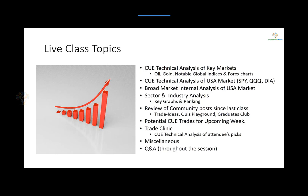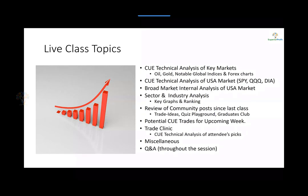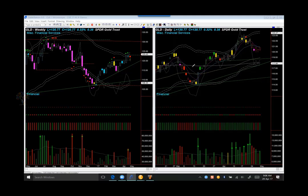As usual, we will go through some commodities — oil, gold, etc. — and then the Indian index and a few forex symbols through Q technical charts. We look at SPY, QQQ, and DIA to check the health of the US market, before going to broad market internal analysis, sector and industry analysis using key graphs, heat map, and ranking table. We may look at some posts in the community since our last class and check for Q trades for the upcoming week.